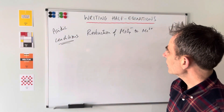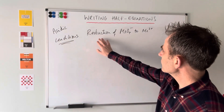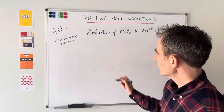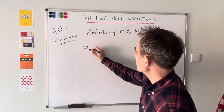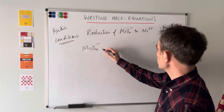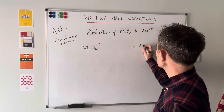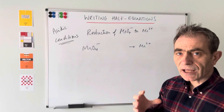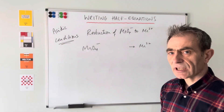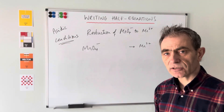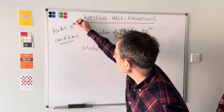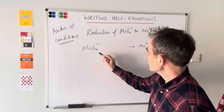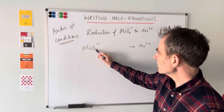The first acidic conditions half equation - the worked example - is for the reduction of the MnO4 minus ion to the Mn2 plus ion. So the first thing is to start the equation off: MnO4 minus, leave some space, going to Mn2 plus. Step one: we need to balance the atoms using H2O or H plus, because we're in acidic conditions.